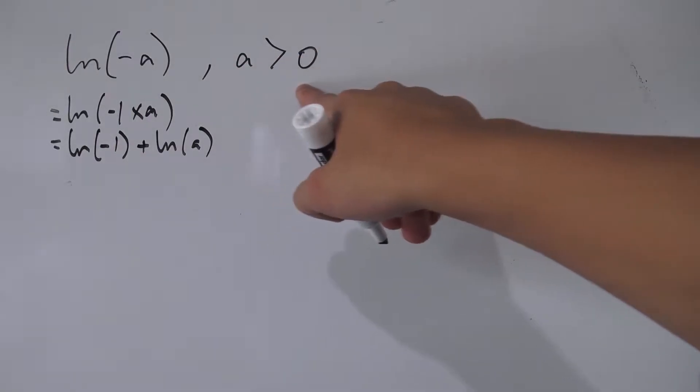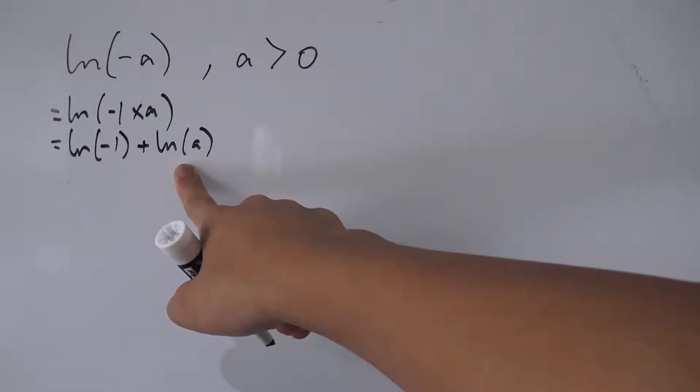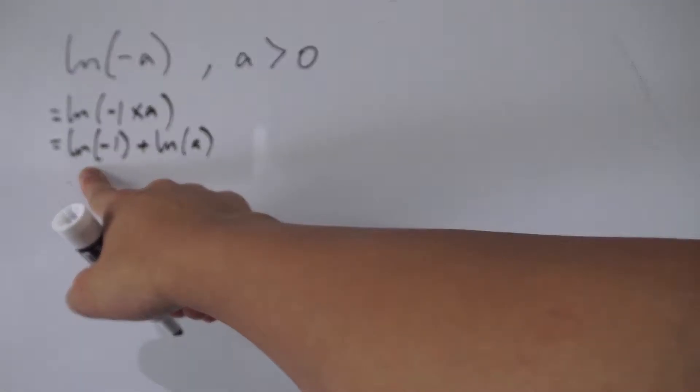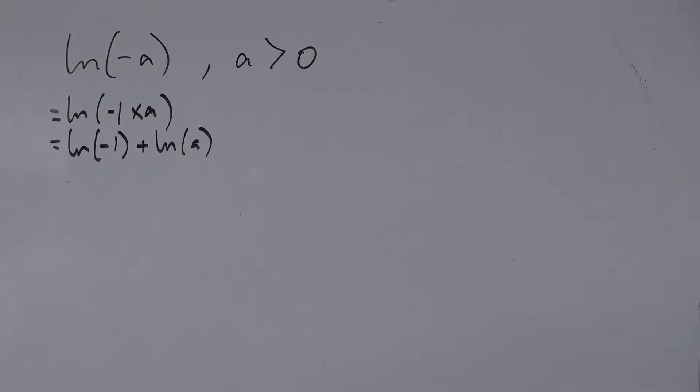So you see a here is strictly greater than zero, so this part here we know how to deal with. But the real trouble is the natural log of negative one, because the natural log of negative one doesn't actually exist—well, at least if you look in the real numbers. So maybe we can work with this guy in the complex world.